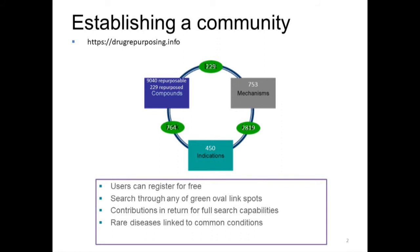That's one of the reasons why I'd like to establish a community — by having everybody's involvement, I think we can make it more useful for all of us, rather like a Wikipedia for repurposing. Users can register for free and get complete access to the search capabilities of the database, so long as you contribute. Contributing is easy: you just have to identify a reference, give it a few more characterizable aspects, and away you go.